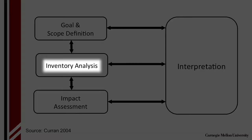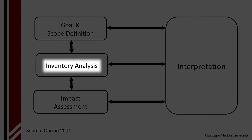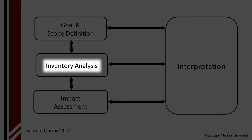Then we do the inventory analysis, where we look through all of the stages of the life cycle and identify what are the important inputs and outputs of the processes that we care about. These may include energy use, CO2 emissions, methane emissions, emissions of criteria pollutants, and water discharges. So we do an inventory of all of those mass flows.